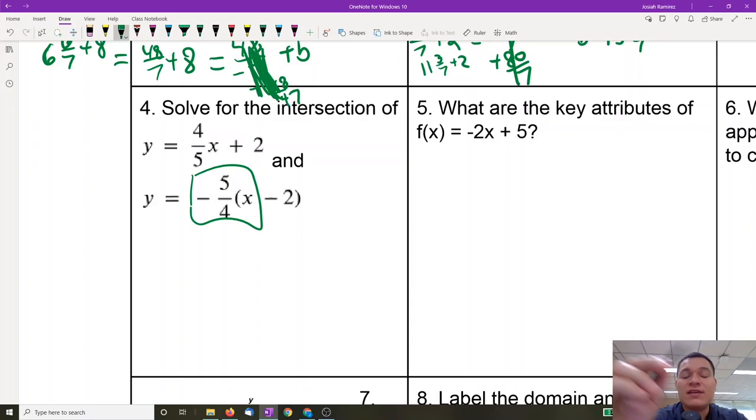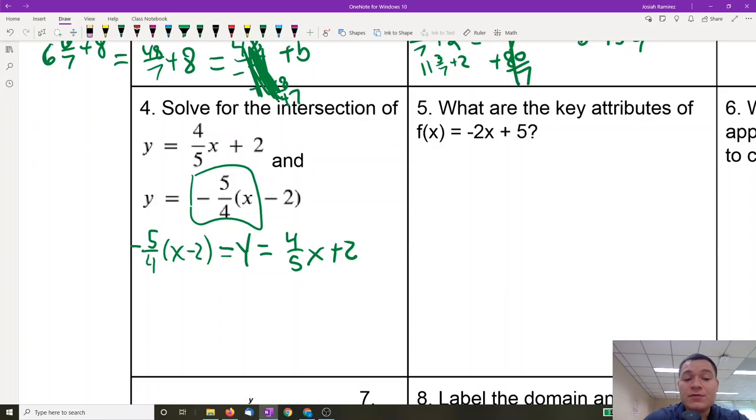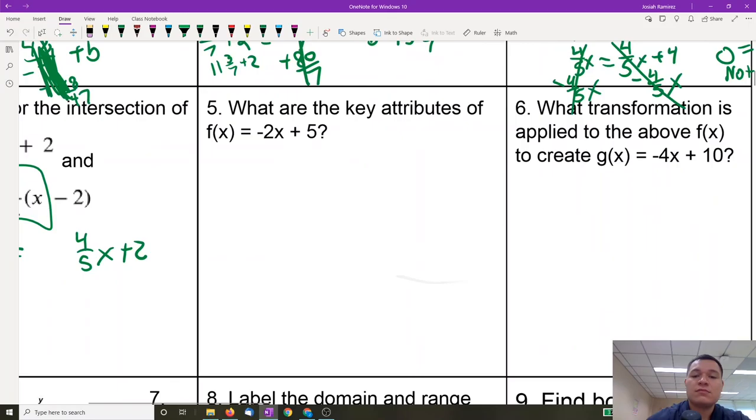But in this one, these are not parallel lines. You can see that we have 4/5, and we have negative 5/4, so this one would actually be perpendicular. You're going to solve it the same way, to where you just say y is equal to one of the equations, and y is also equal to the other equation. Then, once their two sides are equal, you can ignore the y part, and you just solve for x.